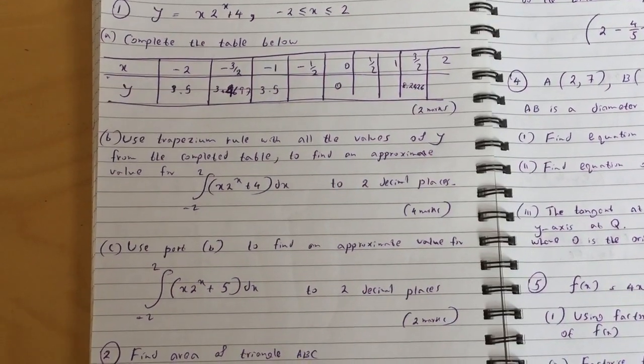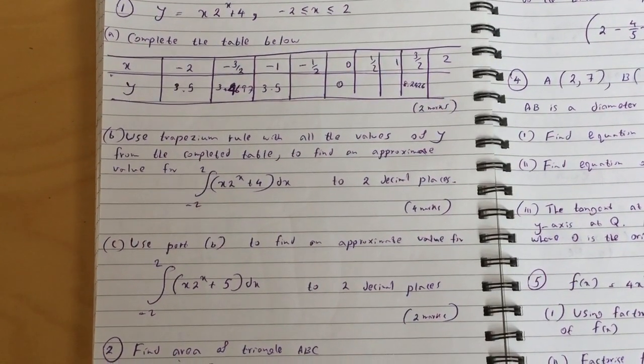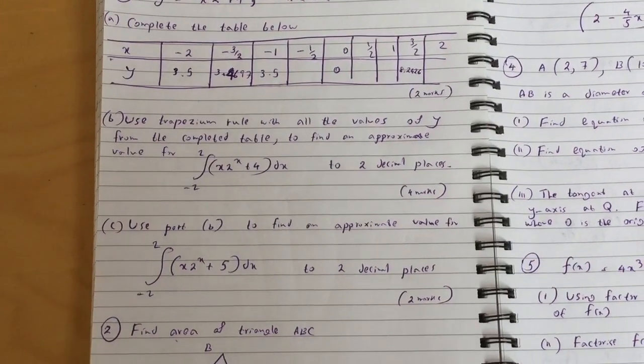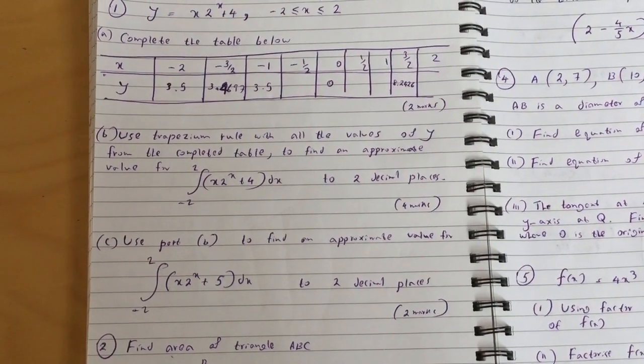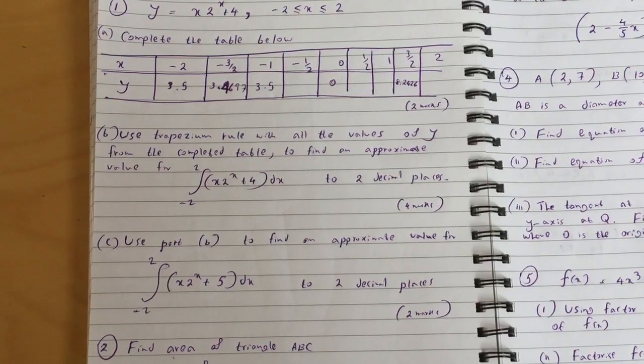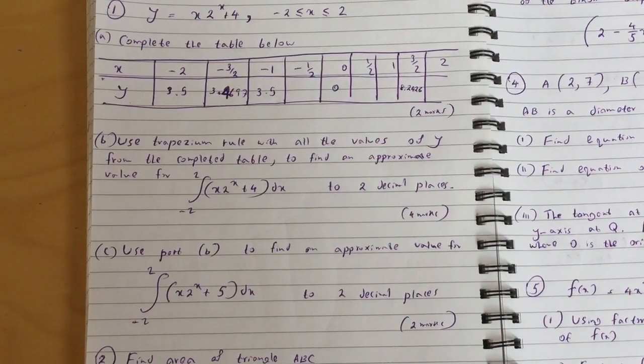Question C: use part B to find an approximate value for integral from minus 2 to 2 of x times 2 to the x plus 5 dx to two decimal places.